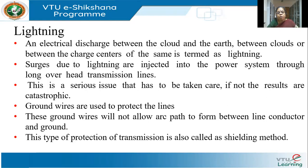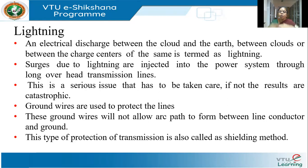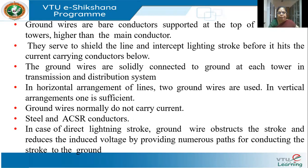These ground wires will not allow the arc path to form between the conductor and the ground. Once the lightning strikes, there will be a discharge from the conductor to the ground. The ground wire is above the transmission line, and therefore it will prevent a flashover between the conductor and the ground. Such a method is called shielding.